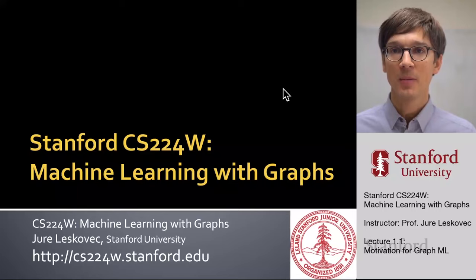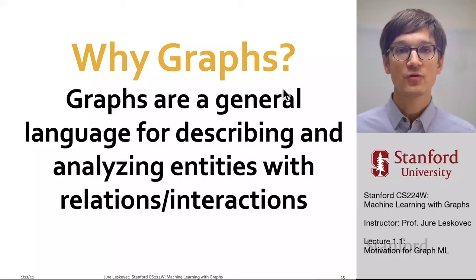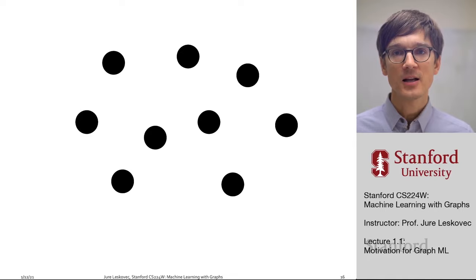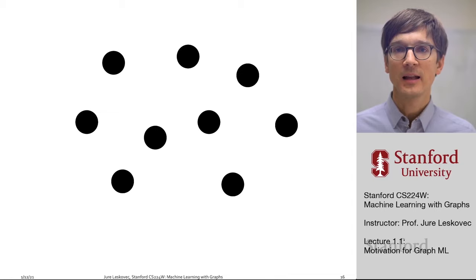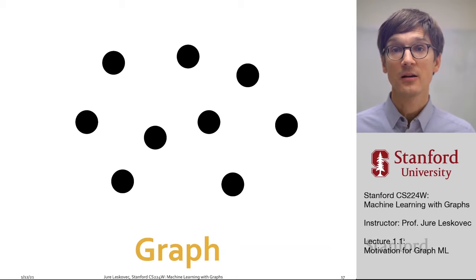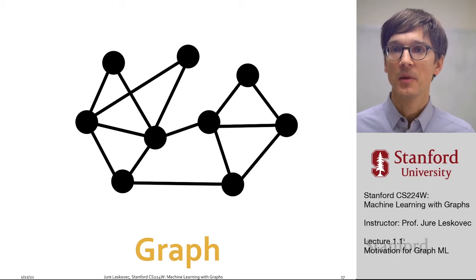Graphs are a general language for describing and analyzing entities with relations and interactions. Rather than thinking of the world or a given domain as a set of isolated data points, we think of it in terms of networks and relations between entities. There is an underlying graph of relations between entities, related according to the connections or structure of the graph.